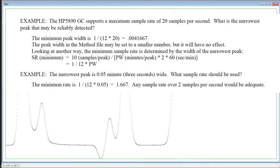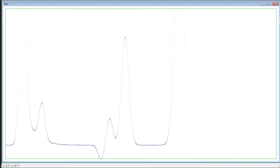As described in the following section on timed events, it is possible to alter the threshold and peak width values at specified times in the chromatogram.